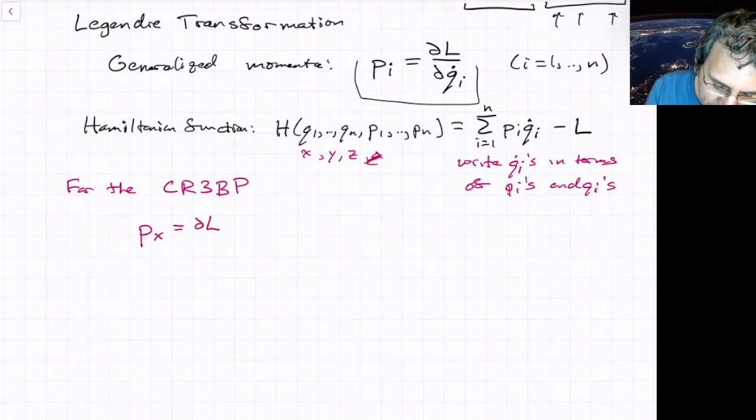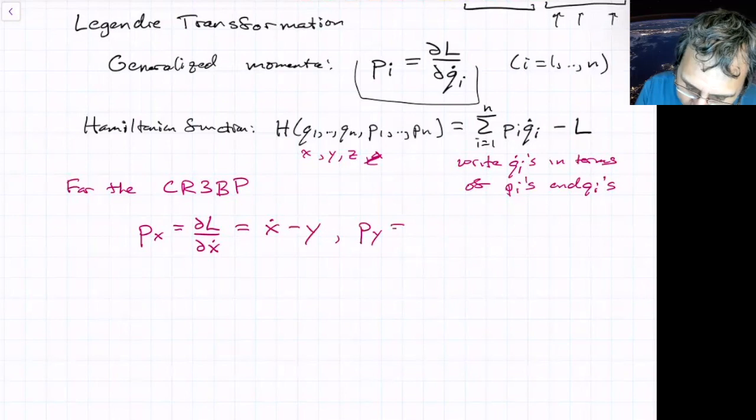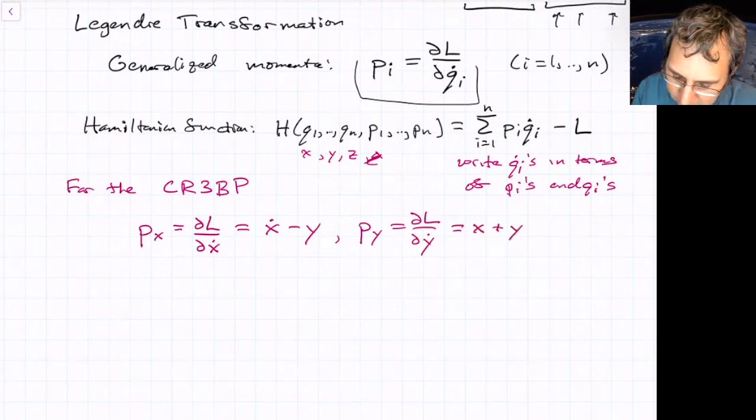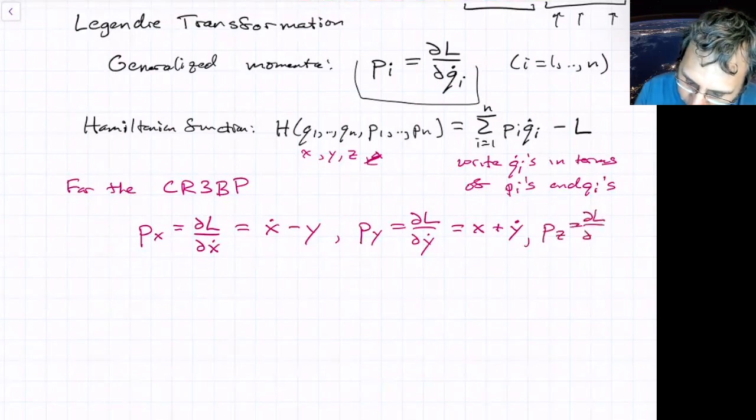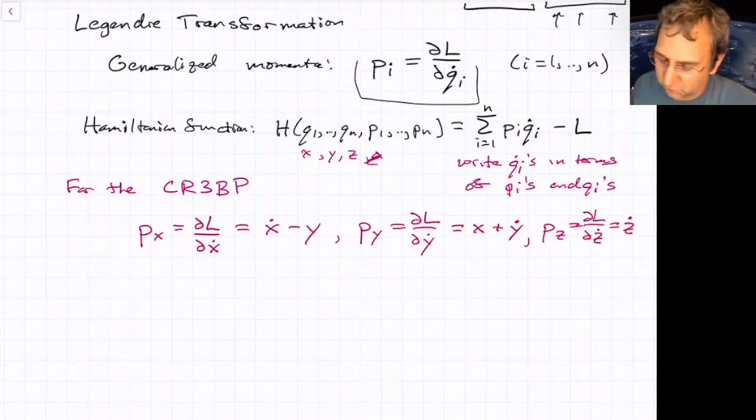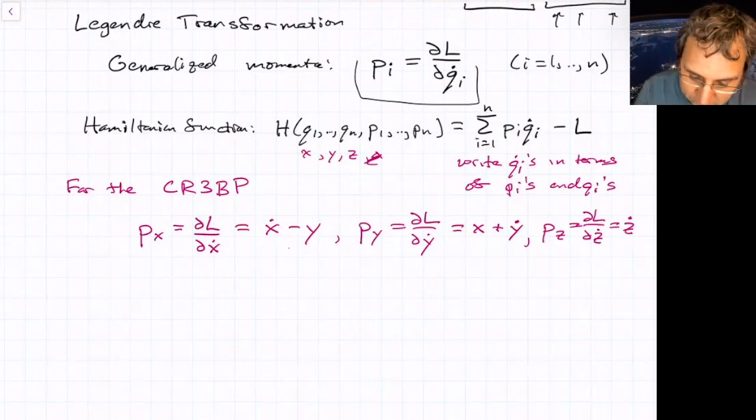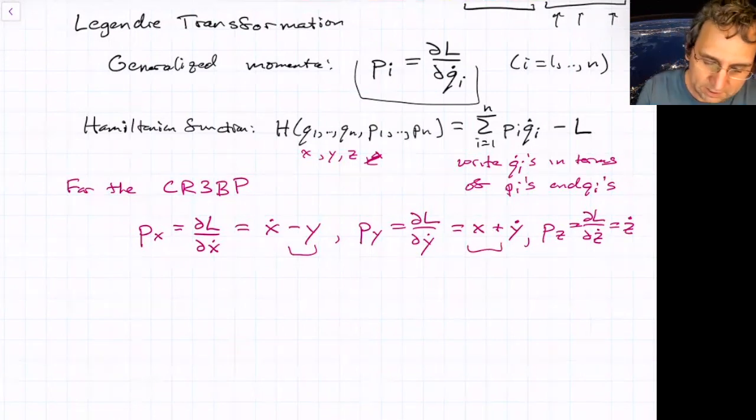The momentum conjugate to y is partial L, partial y dot. And given what we had, that's x plus y dot, or y dot plus x, however you want to do it. z is pretty easy. Partial L, partial z dot. It's just z dot. So you can't think of this momentum the way we usually think of mechanical momentum, right? And mechanical momentum in the x direction in an inertial frame is just going to be mass times that velocity. Here we get these weird other terms because we're in a rotating frame. So it takes some getting used to it at first, but that's just how it is.